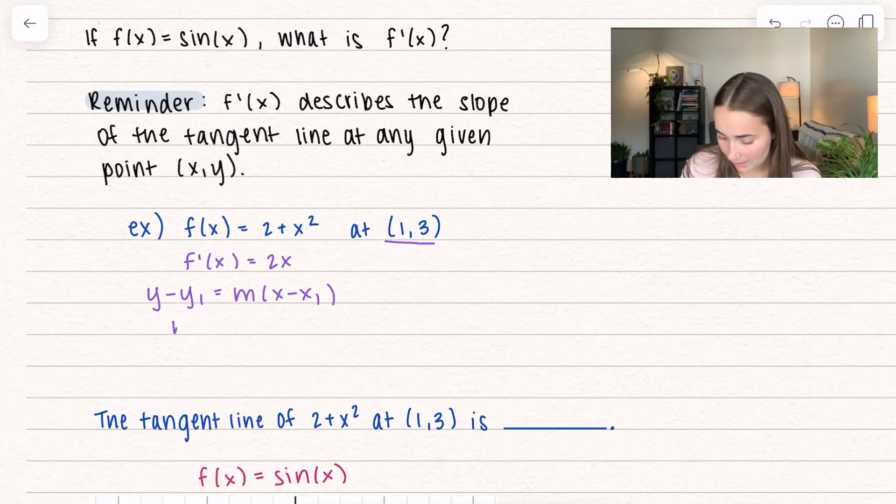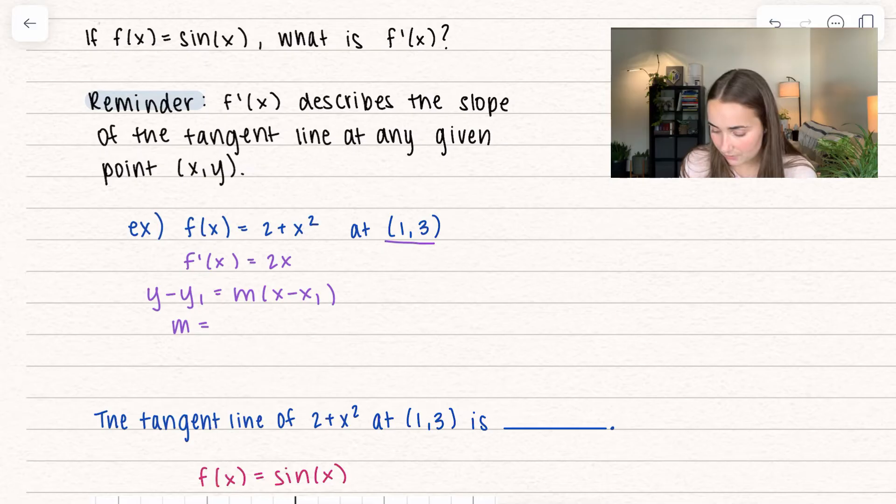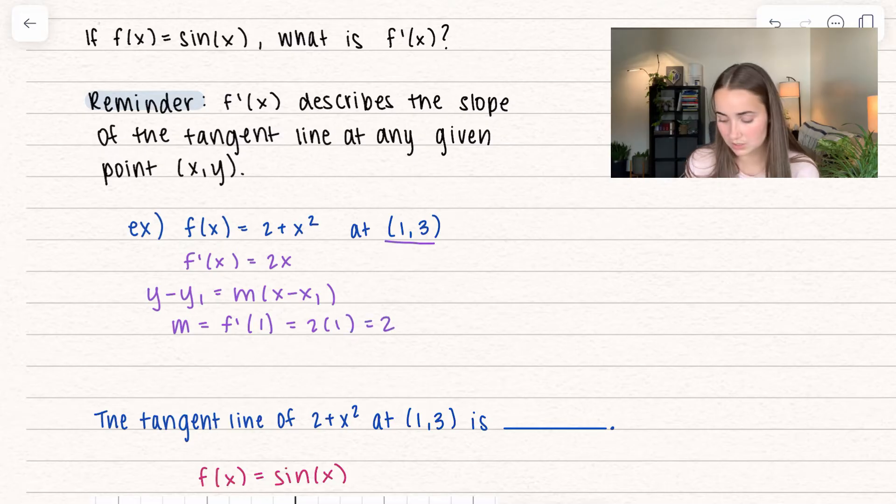So I want to find m, because I already have x1 and y1. In order to find m, I'm just going to plug in my value at the derivative. That gives me 2 times 1, which is equal to 2.